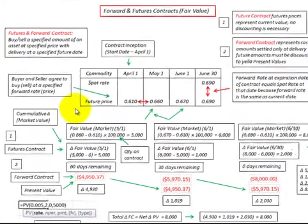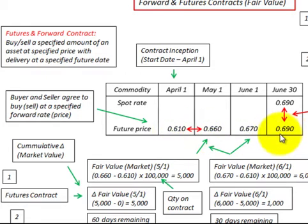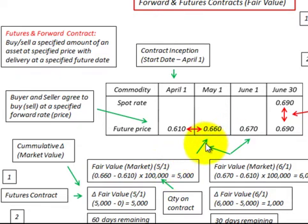To account for the contract, I'm going through an example by looking at the cumulative change in the fair market value of the contract from period to period, and looking at these changes from the beginning to the end of the contract. To do this we compare the current period's forward rate with the contract forward rate — the agreed-on price between the buyer and seller — and then multiply the difference times the quantity under contract. That gives us the fair market value of the contract for the period.